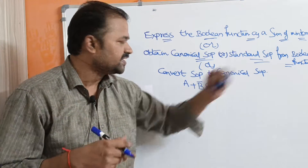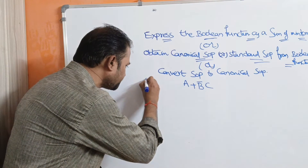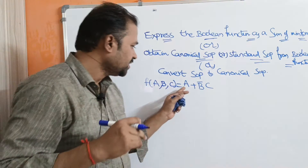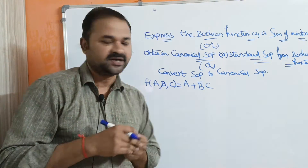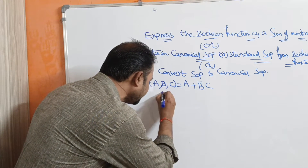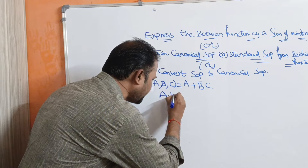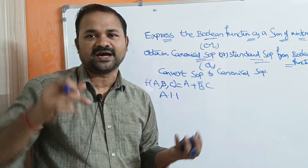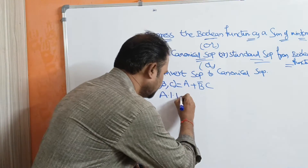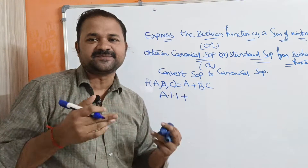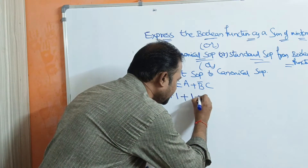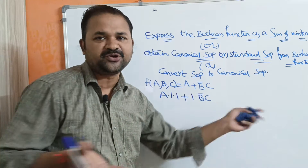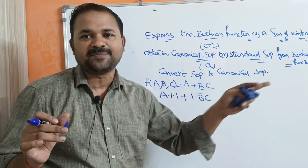Here the function is F(a, b, c) = a + b-bar c. In the first term, b and c are missing, so we have to multiply a with 1 and 1 — the first 1 for getting b, the second for getting c. We have a formula: a into 1 equals a. In the second term, a is missing, so let us multiply b-bar c with 1. The result won't change if we multiply a term with 1.